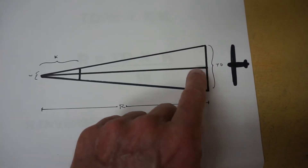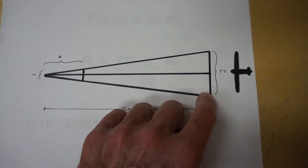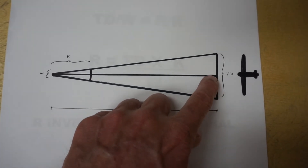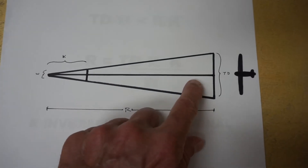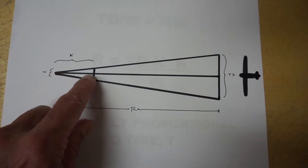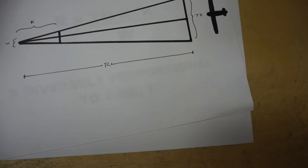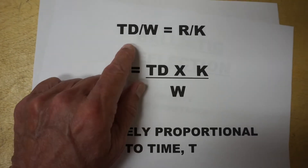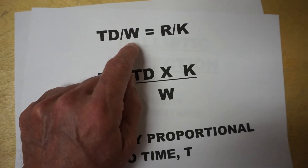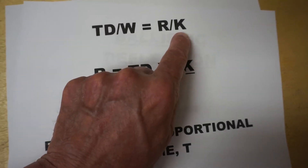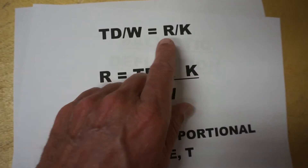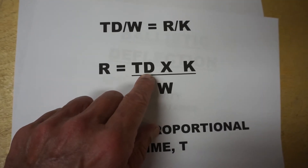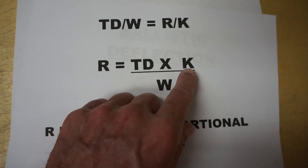It turns out that the ratio between the target dimension and the width of the reticle W is the same as the ratio between the range and the distance K between the gunner's eye and the reticle. Therefore, TD divided by W equals range divided by K. Range can be solved for with the target dimension times K divided by W.